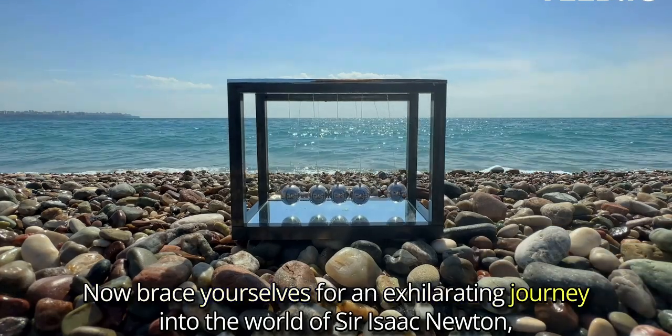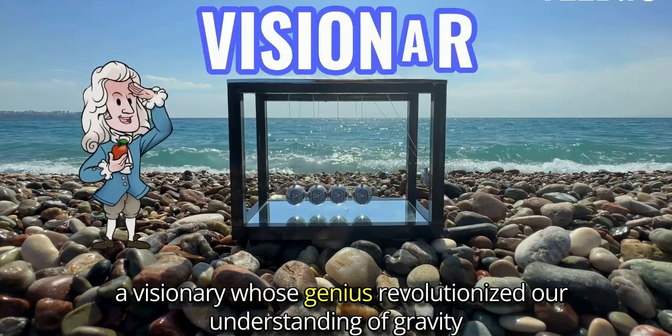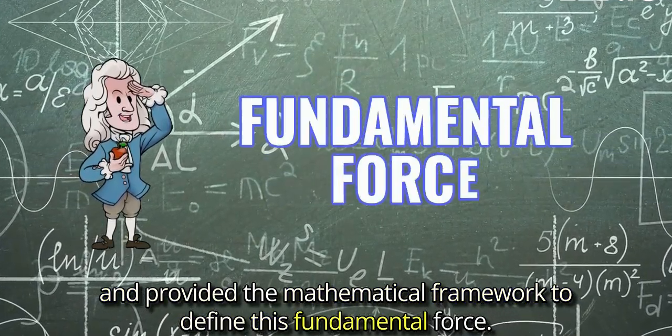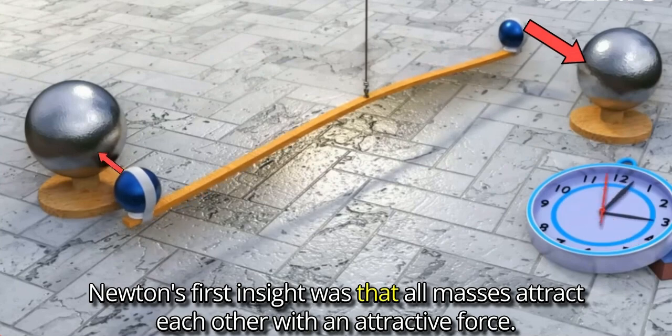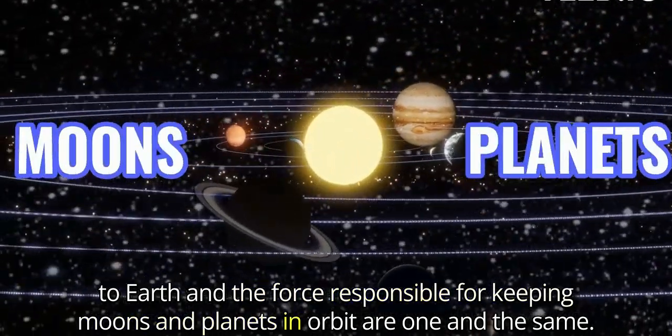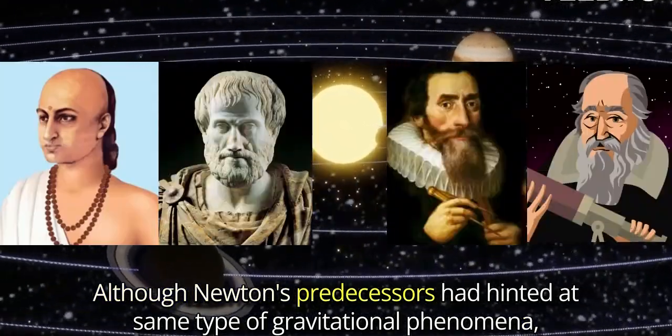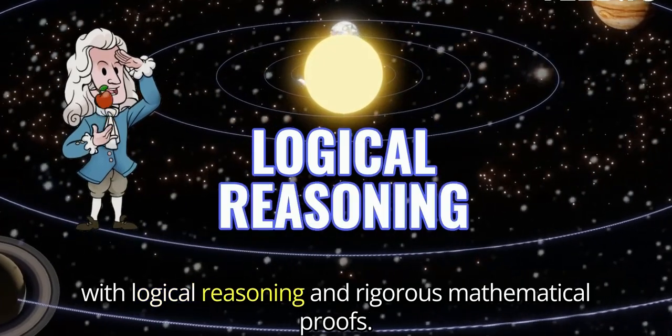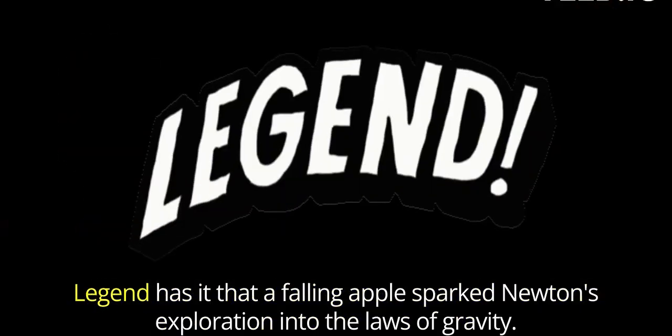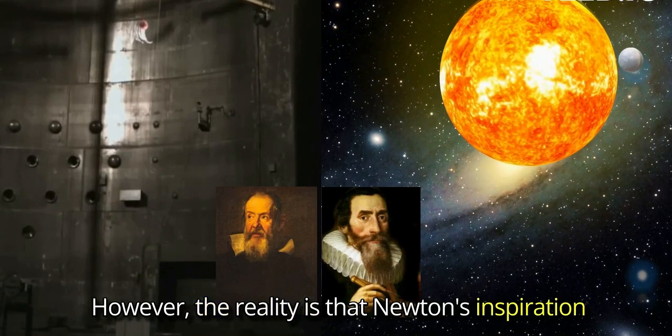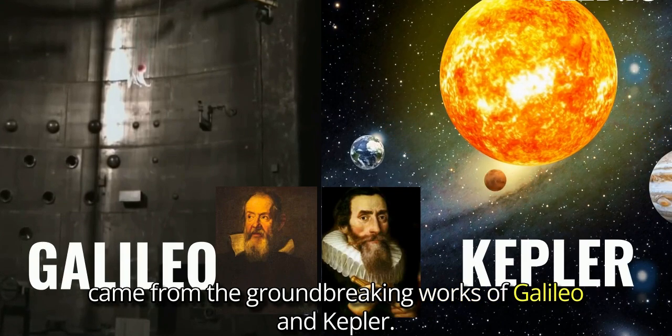Now brace yourselves for an exhilarating journey into the world of Sir Isaac Newton, a visionary whose genius revolutionised our understanding of gravity and provided the mathematical framework to define this fundamental force. Newton's first insight was that all masses attract each other with an attractive force. He postulated that the force responsible for the falling of objects to Earth and the force responsible for keeping moons and planets in orbit are one and the same. Although Newton's predecessors had hinted at same type of gravitational phenomena, Newton's greatness lay in his ability to back his assertions with logical reasoning and rigorous mathematical proofs. Legend has it that a falling apple sparked Newton's exploration into the laws of gravity. However, the reality is that Newton's inspiration came from the groundbreaking works of Galileo and Kepler.